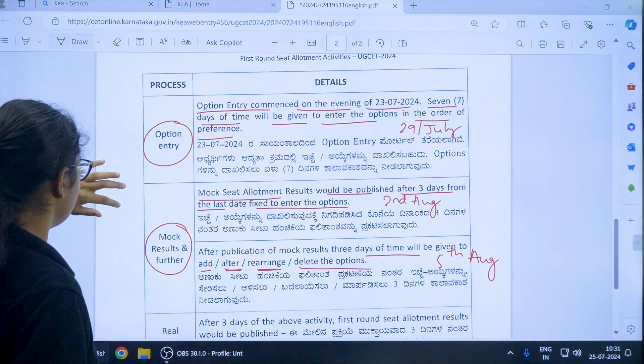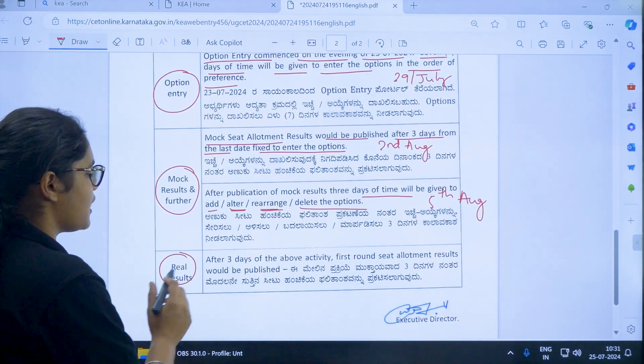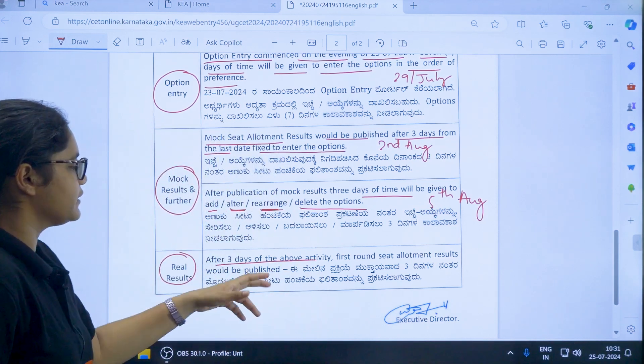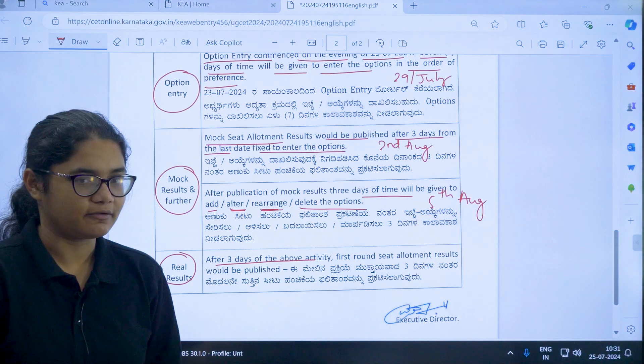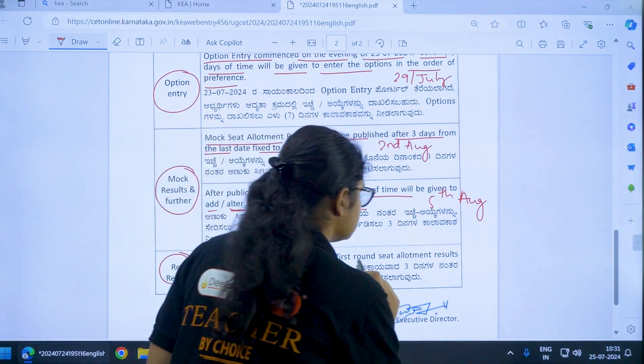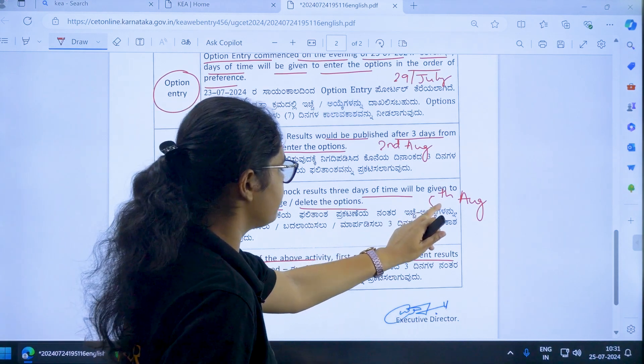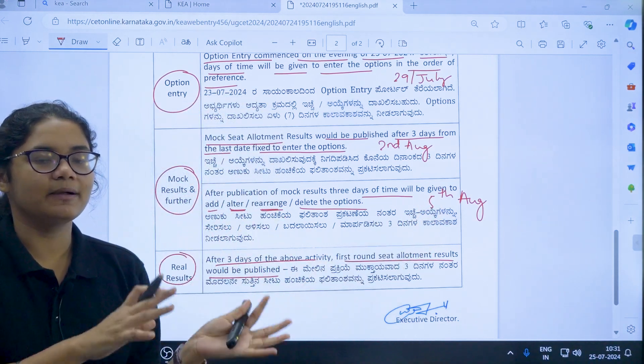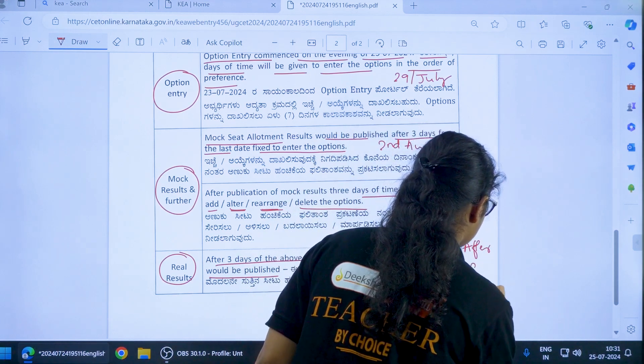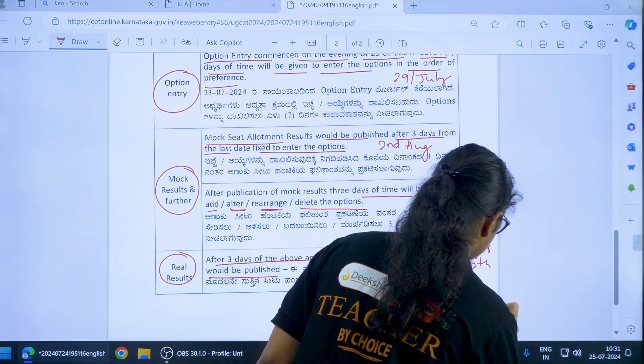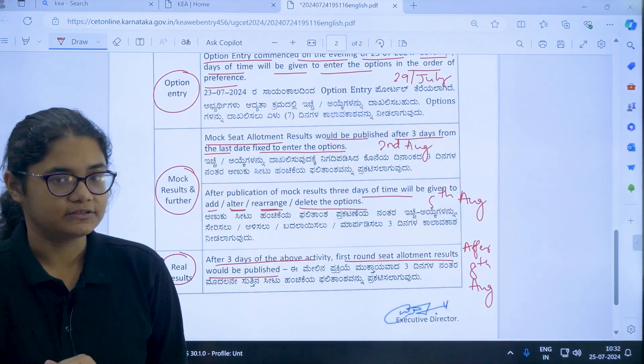After that, your real results will be published. After 3 days of the above activity, means after the time that is given to rearrange, delete or modify your preferences, 3 days after that the first round seat allotment results would be published. We can expect if 5th August is the last date of modification, so by 6th, 7th and 8th, after 8th of August the final seat allotment results would be published. Again, these are the tentative dates according to the calculations we have done.